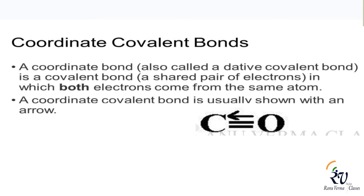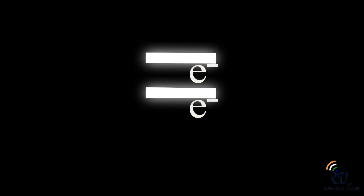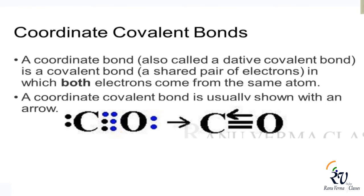There is another type of covalent bond known as the coordinate covalent bond, also called the dative covalent bond. In this type of bond, only one atom provides both electrons for bond formation. For example, carbon has 4 electrons and oxygen has 6 electrons in their outermost shells. Two electrons of carbon and 4 electrons of oxygen participate in bond formation. Representing carbon's electrons with black dots and oxygen's with blue dots: two bonds are formed by black and blue dots as a regular covalent bond, but both blue dots form a coordinate bond because that pair of electrons is provided by the oxygen atom only.